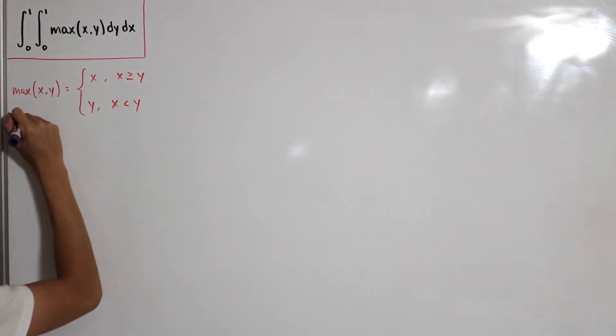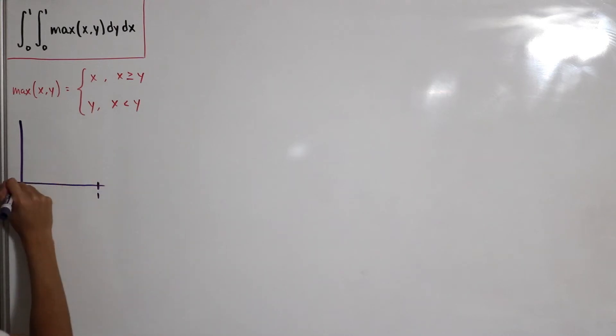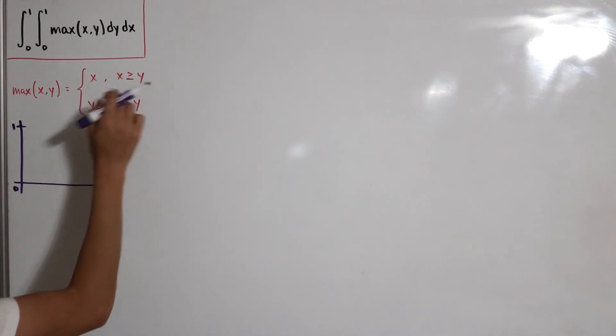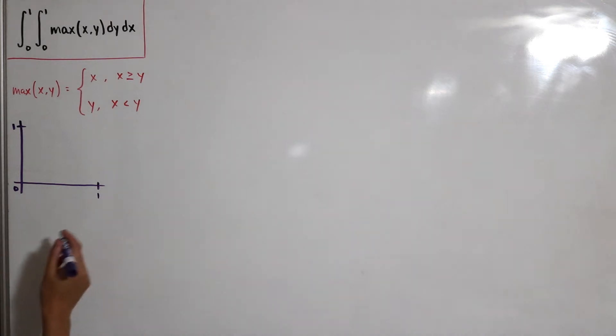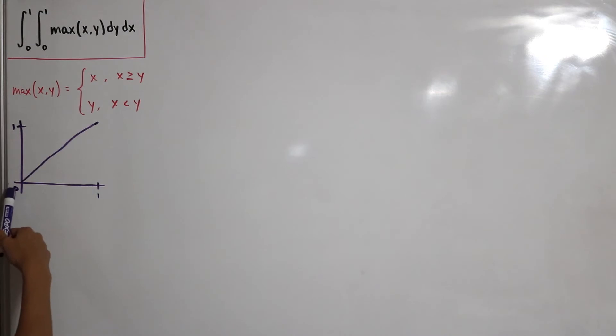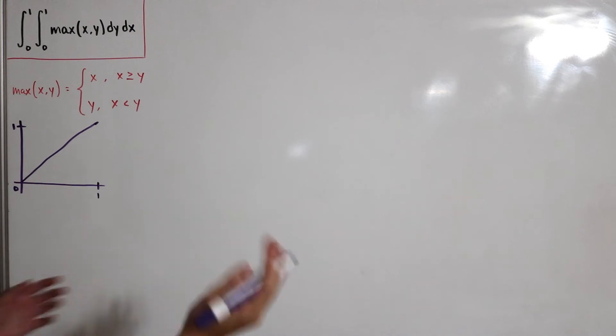Over here we have our little graph. The domain we're looking at is from 0 to 1. Our y is here and our x is here. We also put in this equal to inequality because x and y can be the same numbers. If that was the case, it could be defined as a linear function, y equals x.